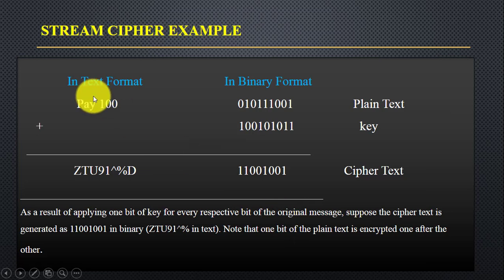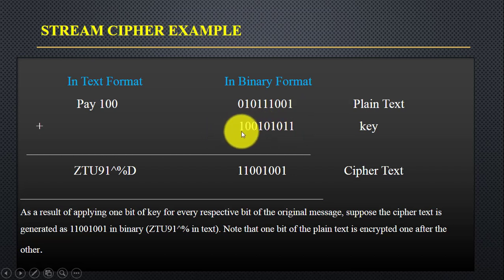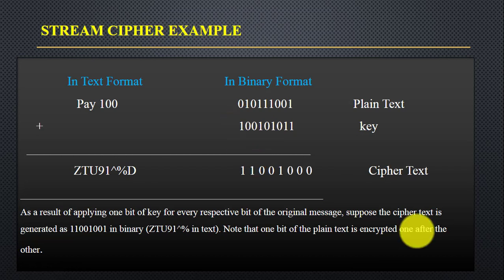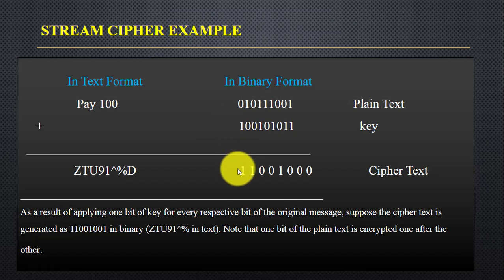Here you can see we have the plain text in text format P100 and its binary format. We are using a key, where for each bit we have a corresponding key value. We apply XOR logic for encryption: when both inputs are 1 the output is 0, and when one input is 0 and the other is 1 the output is 1. That's how stream cipher works — one bit at a time is encrypted.